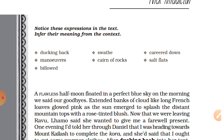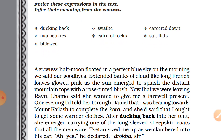A flawless half moon floated in a perfect blue sky on the morning we said our goodbyes. Extended banks of cloud, like long French loaves, glowed pink as the sun emerged to splash the distant mountain tops with a rose-tinted blush. Now that we were leaving Ravu, Lamo said she wanted to give me a farewell present. One evening I had told her through Daniel that I was heading towards Mount Kailash to complete the Kora.